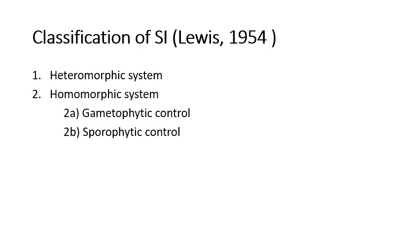The concept of SI was classified by Lewis in 1954 into two different systems: the heteromorphic system, which differs in morphology, and the homomorphic system, which is similar in morphology. The homomorphic system is further divided into two types: gametophytic, based on the genotype of the gamete, and sporophytic, based on the genotype of the plant on which it is produced.